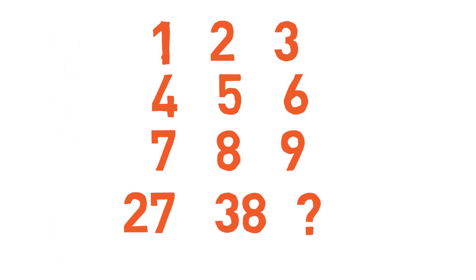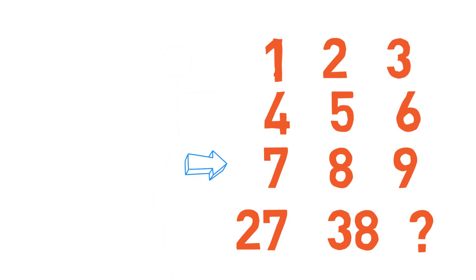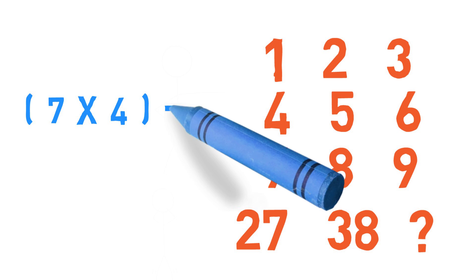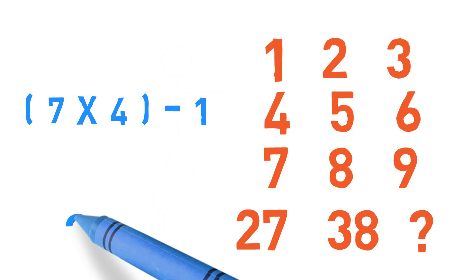I am going to look at these three numbers and see if I can manipulate them to get 27. Yes I can. 7 times 4 minus 1 gives us 27.